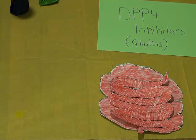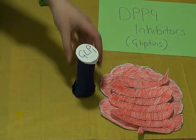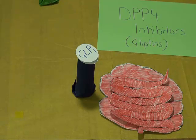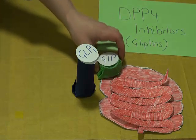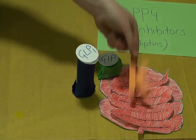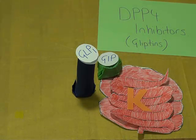When we discussed exenatide, we talked about GLP-1 and its role in stimulating insulin secretion. Another peptide hormone which has a similar role is GIP. GIP is released by K-cells in the duodenum and proximal jejunum.